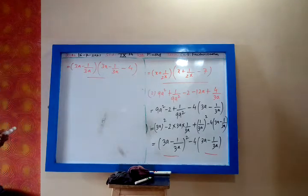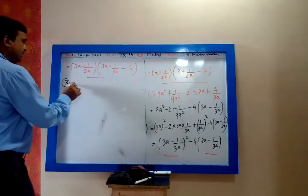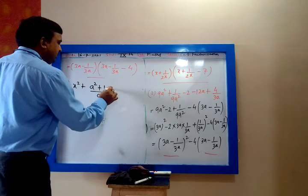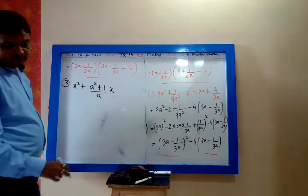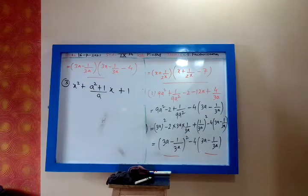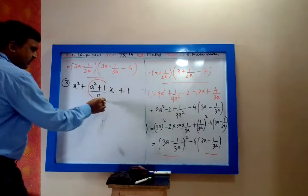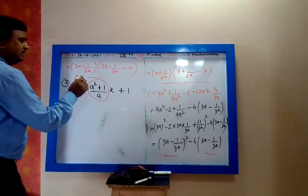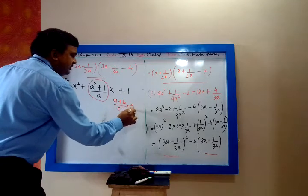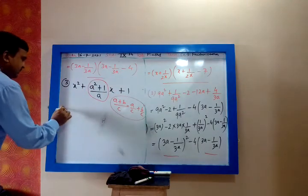Third one: x² + a² + 1/(a·x), multiplied by (x + 1). To solve this, you do not multiply x directly — you have to split it by the rule (a + b)/c = a/c + b/c.